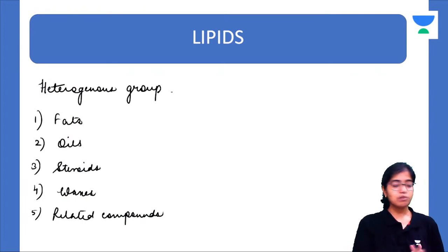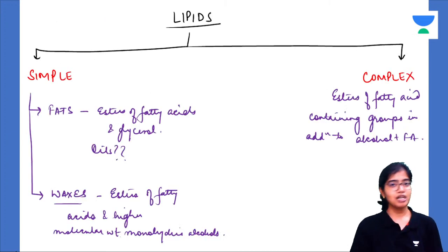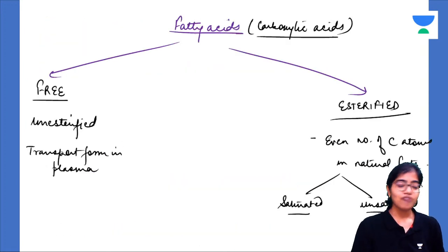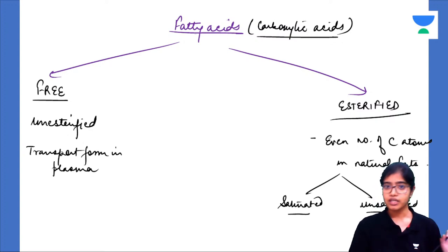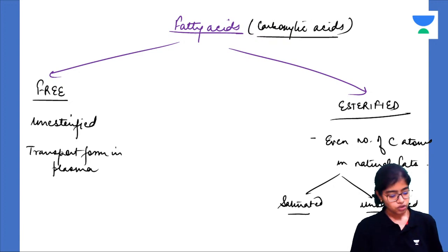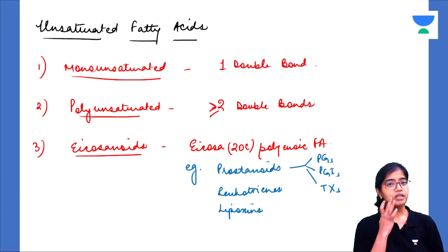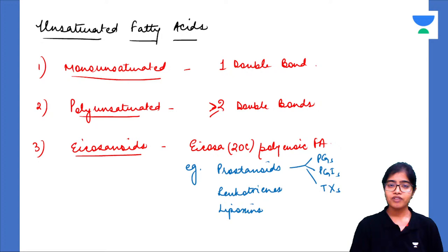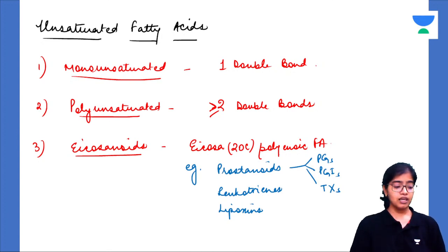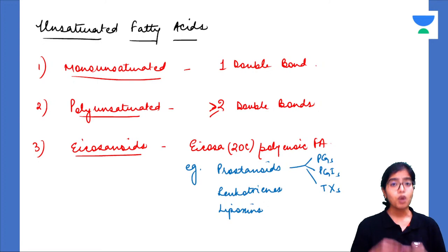We previously discussed the classification of lipids into simple and complex, and the definition of fatty acids as aliphatic carboxylic acids that can be either free or esterified. Saturated fatty acids contain no double bonds; unsaturated fatty acids contain one or more double bonds — monounsaturated if one, polyunsaturated if two or more. A special group called icosanoids are 20-carbon unsaturated fatty acids that form important mediators like prostaglandins, prostacyclins, thromboxane A2, and leukotrienes.